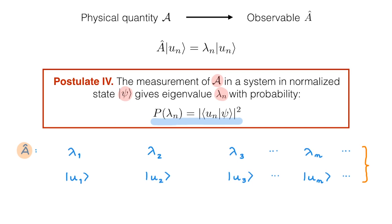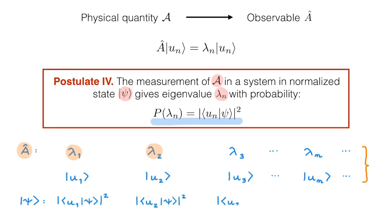But when we measure A, we measure it in a system in a specific state ψ. What postulate 4 tells us then is the following: we will get λ1 with probability given by the absolute value squared of ⟨u1|ψ⟩, we will get λ2 with probability given by the absolute value squared of ⟨u2|ψ⟩, and so on.